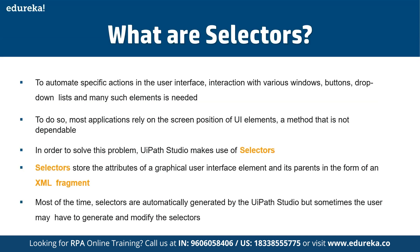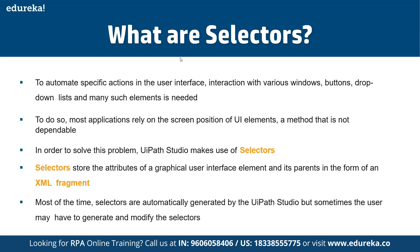To automate specific actions in the user interface — interactions with windows, buttons, drop-down lists, and other elements — selectors are required. Most applications rely on the screen position of UI elements, a method that is not dependable, so UiPath Studio makes use of selectors. Selectors store the attributes of a graphical user interface element and its parent in the form of an XML fragment. Most of the time selectors are automatically generated by UiPath Studio, but sometimes the user may need to generate and modify them as well.